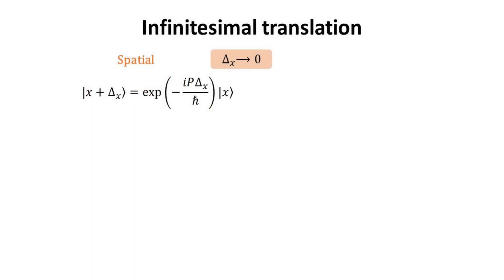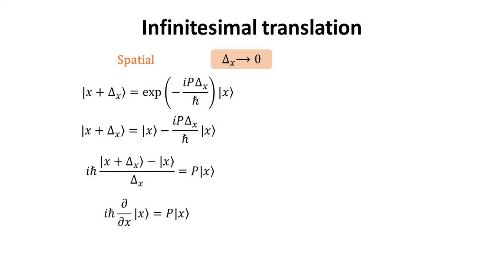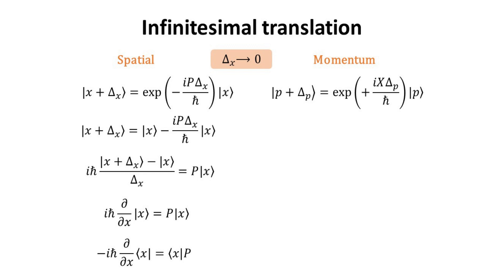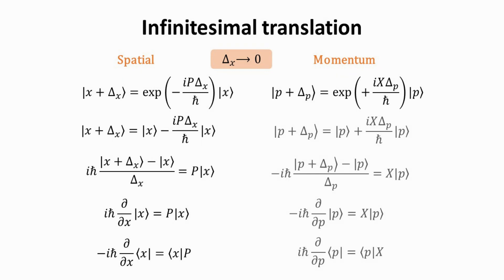One more point before we wrap up this chapter. Consider generating an infinitesimal spatial translation of amount δx. The exponential function can be expressed in its Taylor expansion up to first order in δx. This allows us to arrive at the well-known differential form of the momentum operator in the position representation. The dual version for the bra is obtained by taking the adjoint. Similarly, considering an infinitesimal momentum translation of amount δp, we can arrive at the well-known differential form of the position operator in the momentum representation.